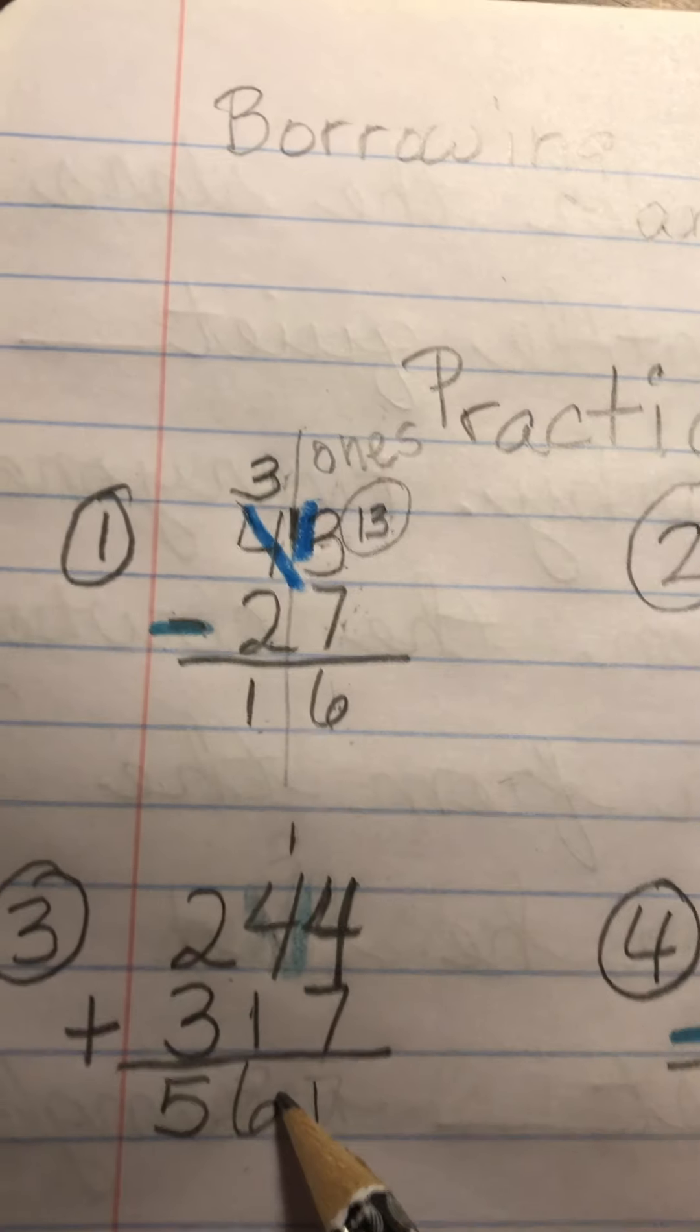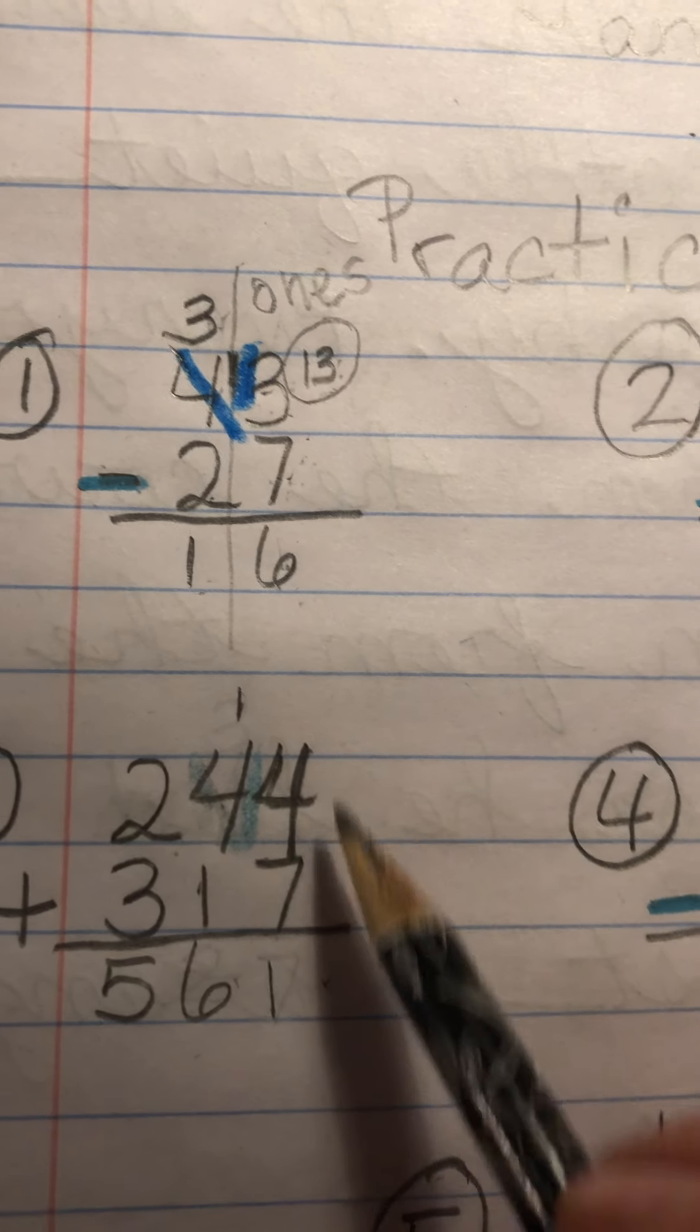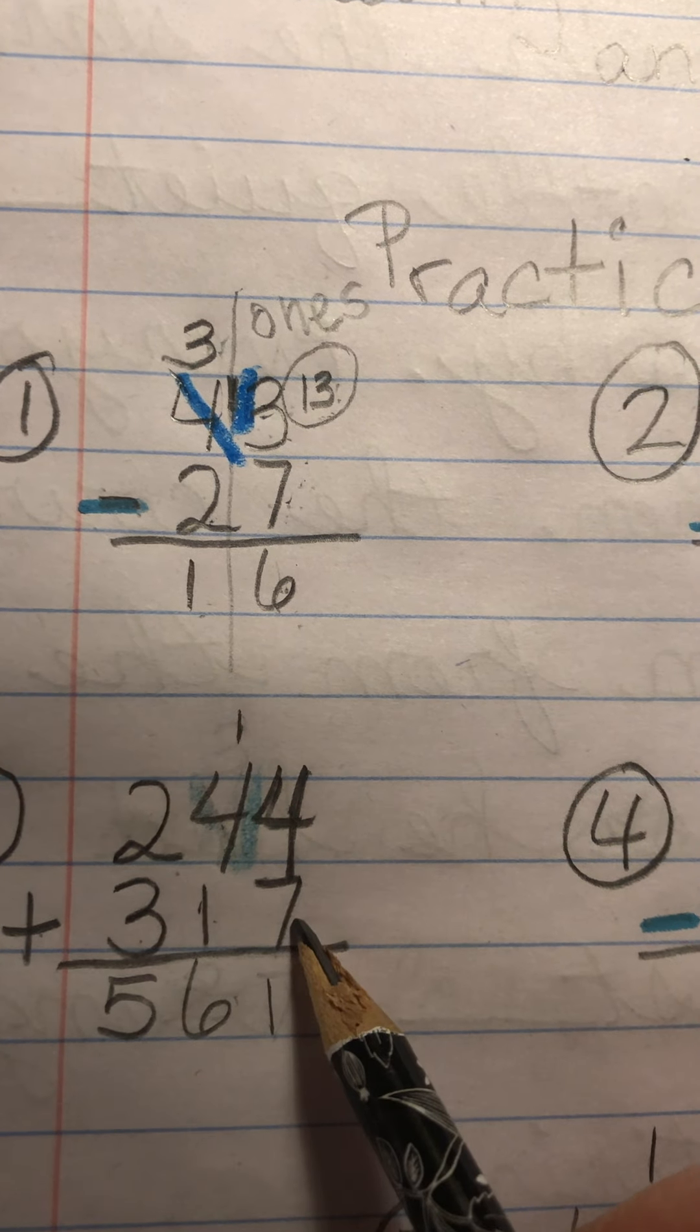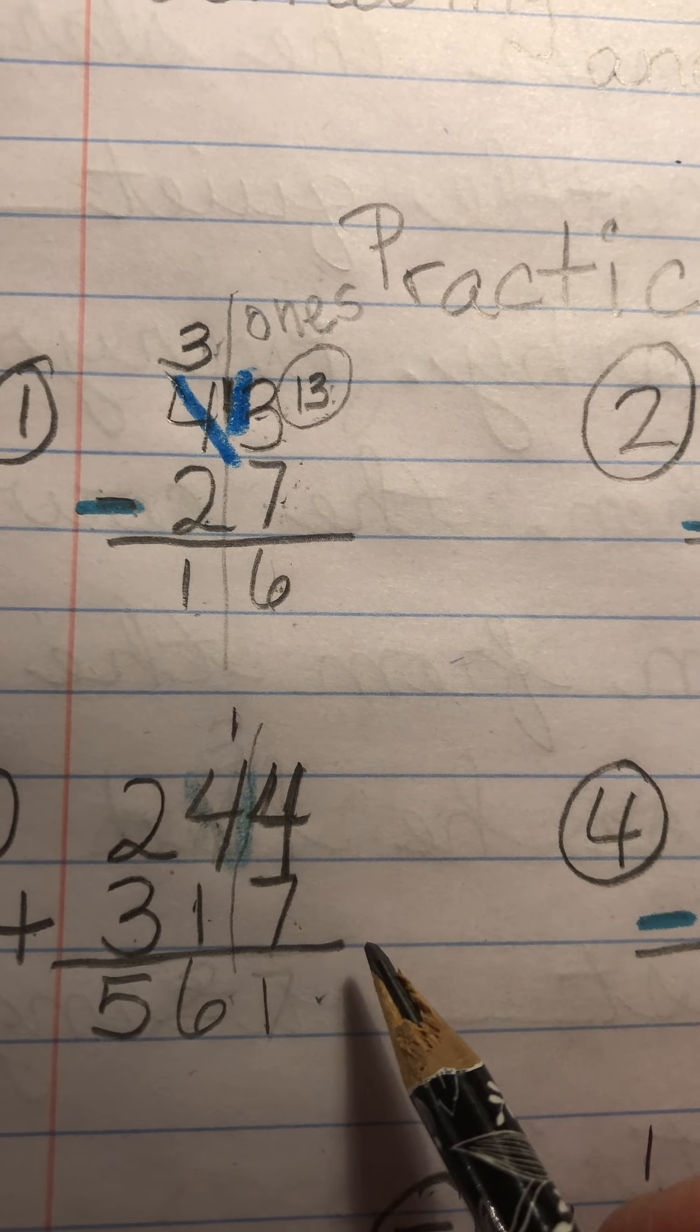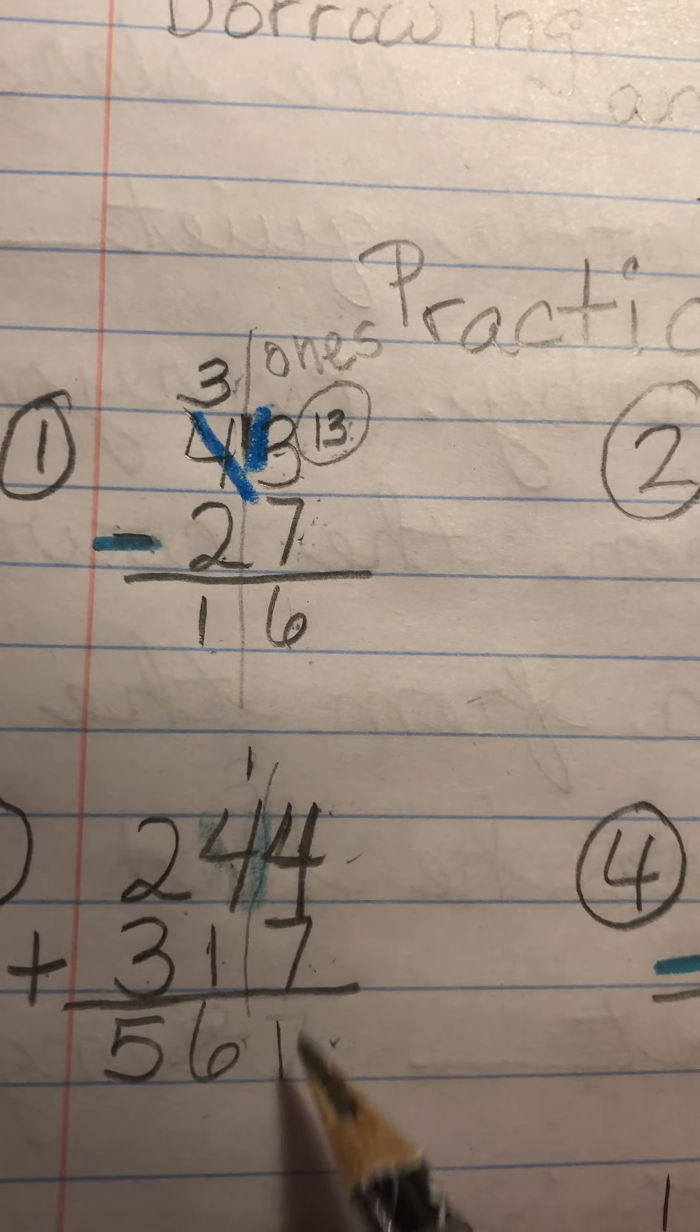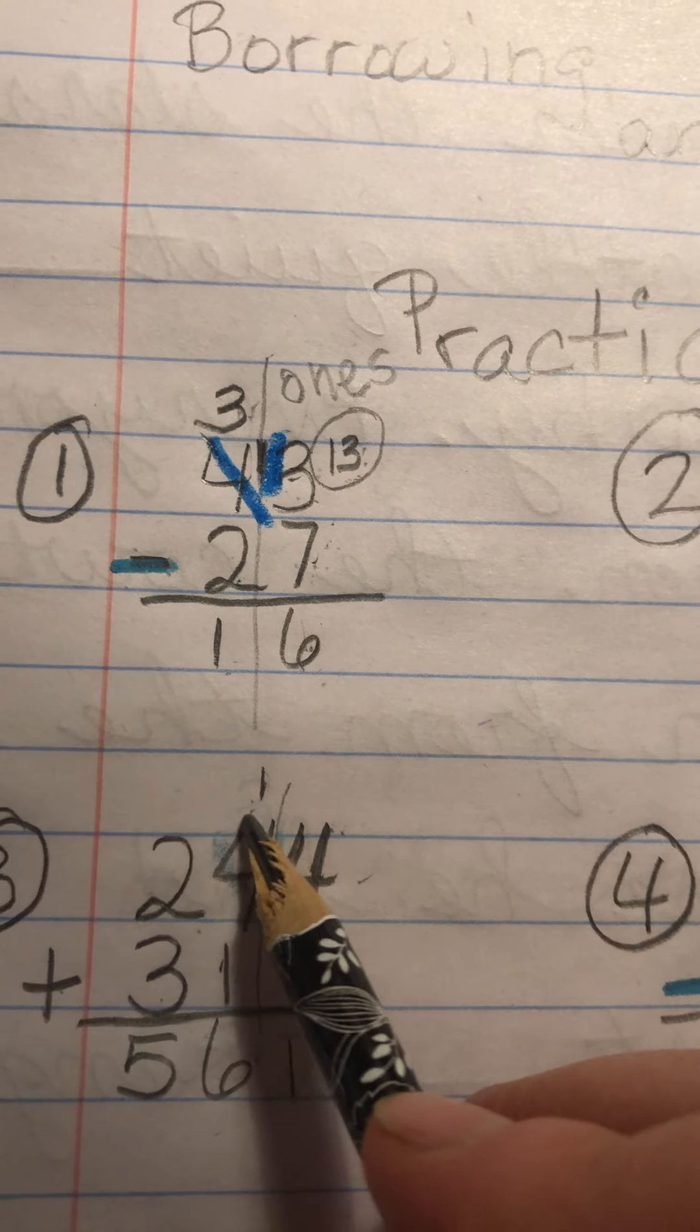Now the next problem I forgot was an addition problem. So I started subtracting, and then I corrected it. This is 244 plus 317. 4 plus 7 is how we're going to start, always starting with the smallest common column of numbers first. 7 plus 3 is 10, and I have that memorized. So then I add one more, and I know I get 11. 11, and I carry the 1 of the 11 where it goes into the 10s column.